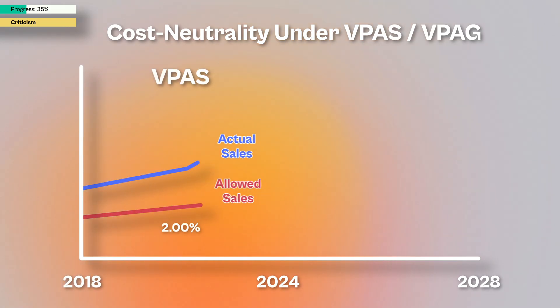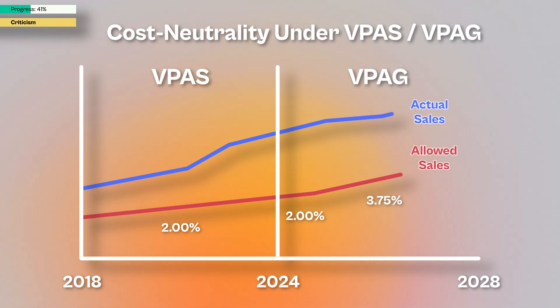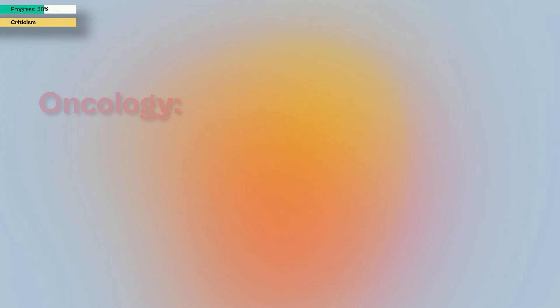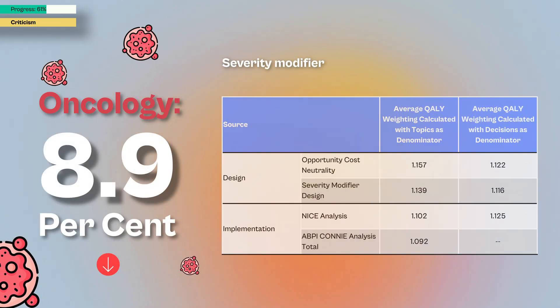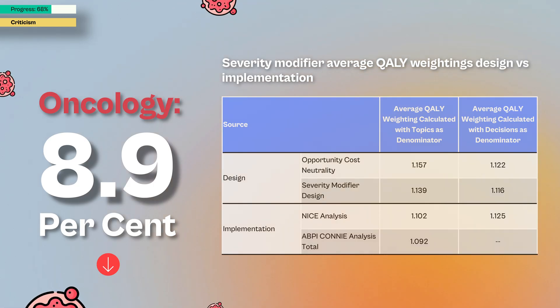However, this strict approach wasn't really necessary. The NHS medicine budget is already capped under the VPAS — the Voluntary Scheme for Branded Medicine Pricing and Access — which sets spending limits between the government and the pharmaceutical industry. Under VPAS, any branded medicines expenditure above the agreed cap is repaid by industry in the form of rebates, effectively ensuring overall cost neutrality. According to the ABPI's CONI report, oncology medicines now receive around 8.9% less weighting under the severity modifier compared to what they would have under the previous end-of-life criteria.